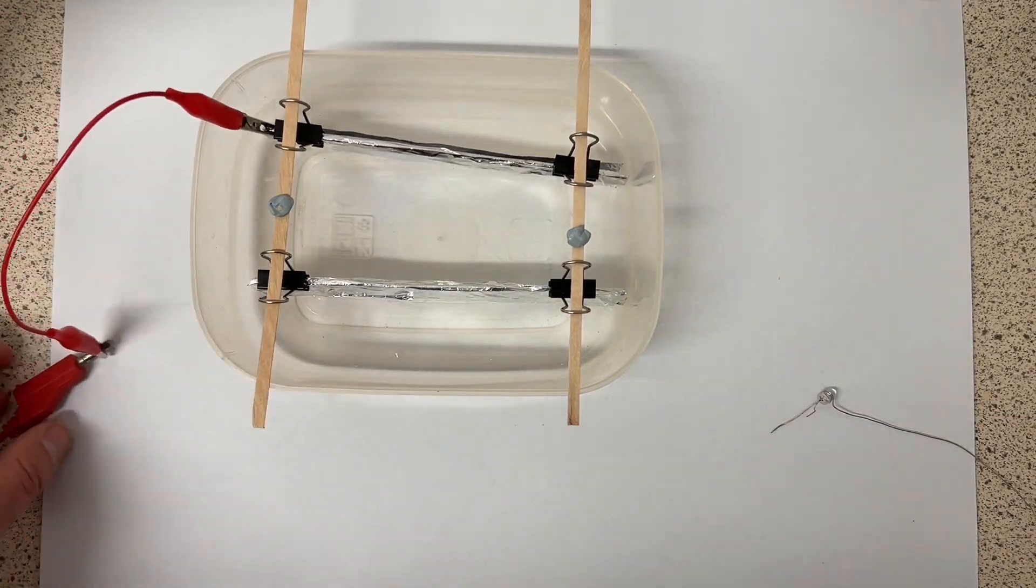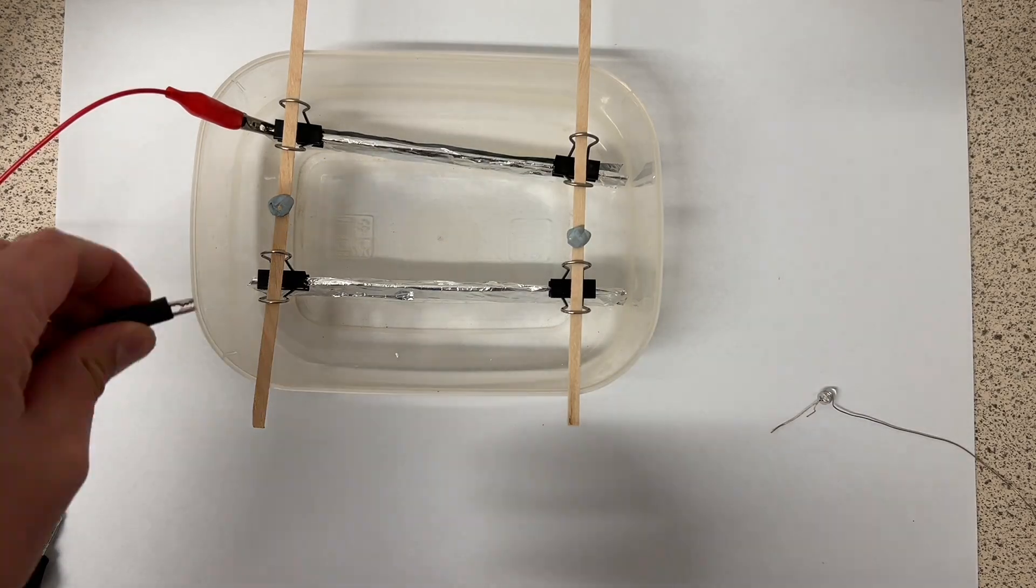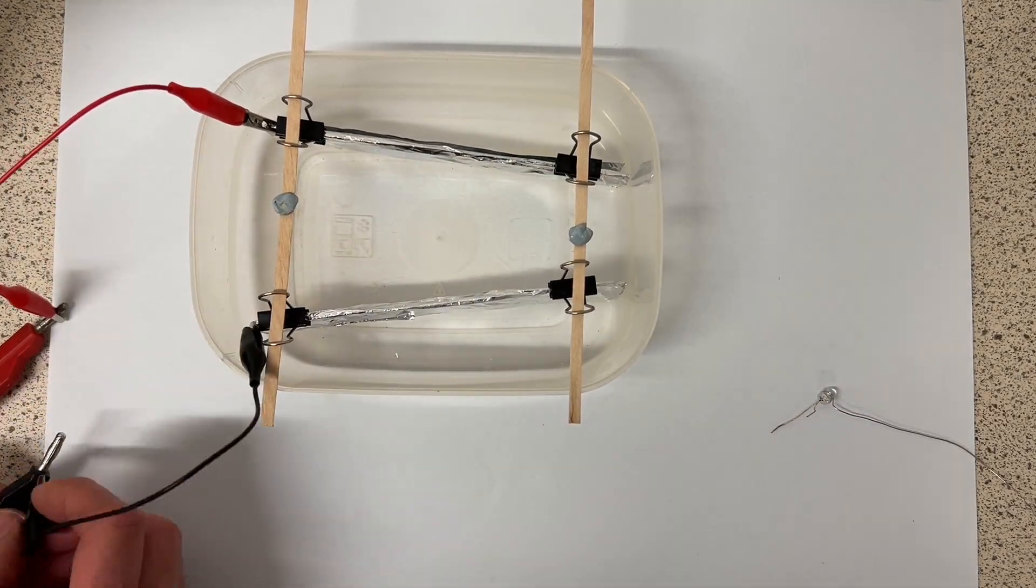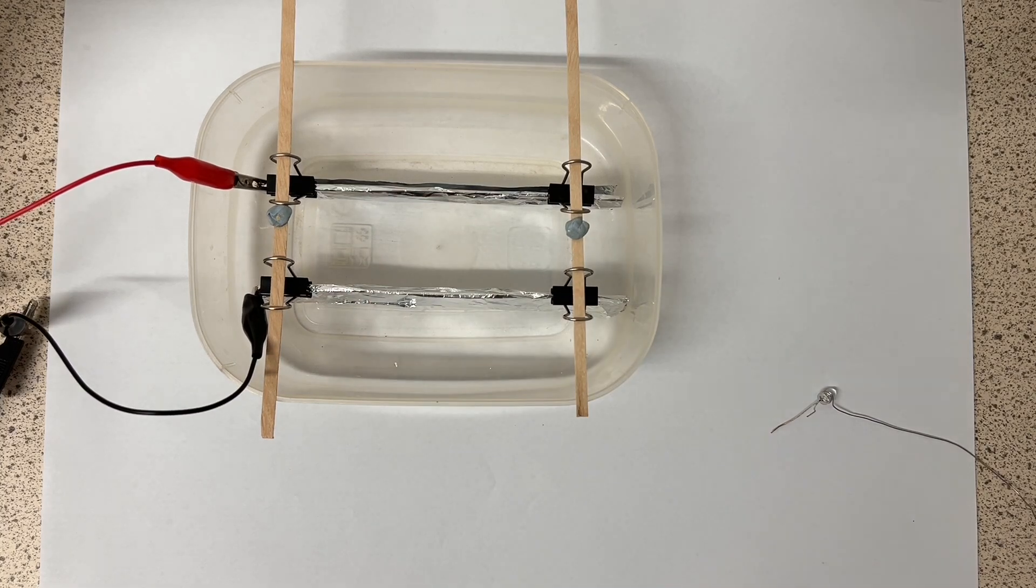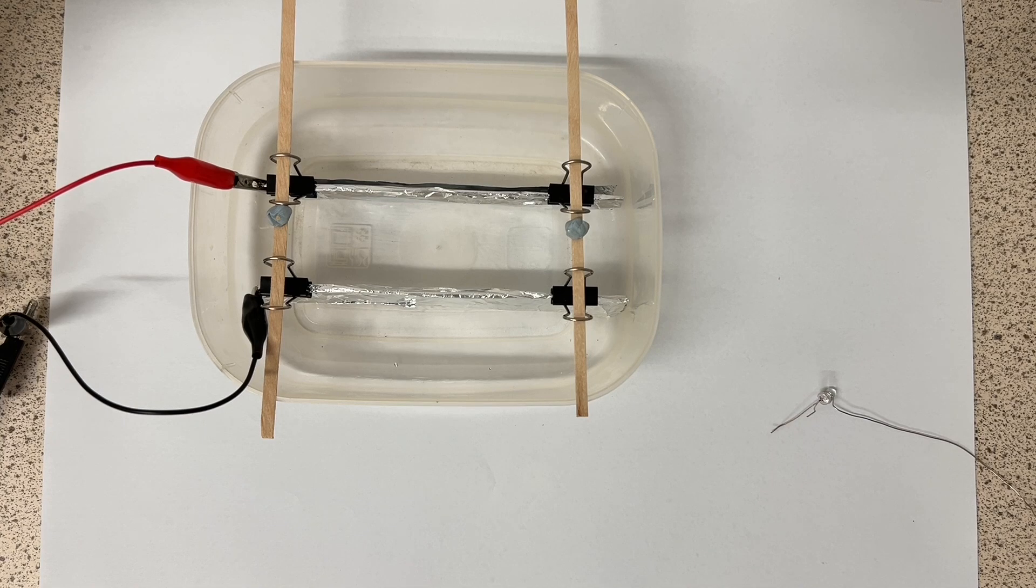Then I'm going to use crocodile clips to connect the top electrode to the positive terminal of a 9 volt power supply and the bottom electrode to the negative terminal. But you can also use a PP3 battery.